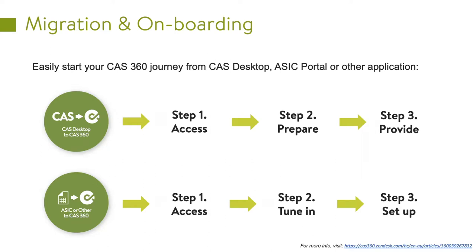First, ensure that you have your CAS360 license up and running, logged in and able to access the software. The second step for CAS desktop users is we recommend running a validation process, which goes through three key functions: auto-fixing issues the system identifies, doing any manual fixes prompted, and identifying items you may be able to ignore.